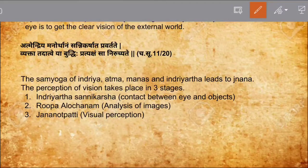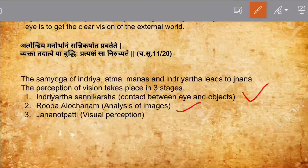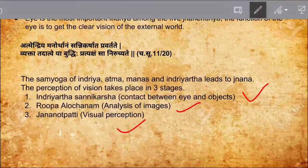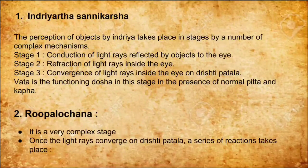The perception of vision takes place in three stages. The first is Indriya Artha Sannikarsha — the contact between the eye and the object. The second is Rupa Alachanam — analysis of images. The third is Jnanapati — visual perception. We are going to deal with each one in detail.